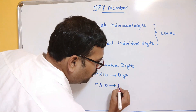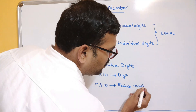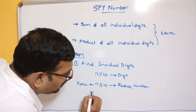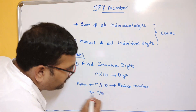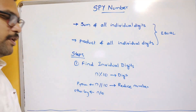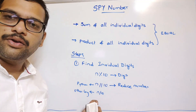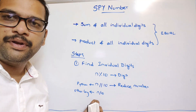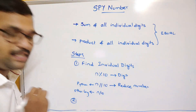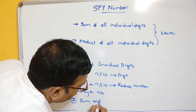This floor division is used in Python. In other languages we use n divided by 10 — you can use either floor division or the normal division operator. After finding individual digits, the second step is to find the sum and product of all individual digits.